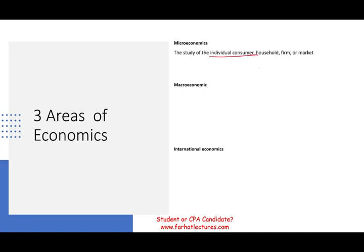Microeconomics is the study of individual consumers, households, firms, or specific markets. You are studying the supply and demand for that individual consumer, household, or firm. Also covered are prices and output, as well as the effect of external forces on the economic activities of these various units. We're going to start looking at microeconomics beginning with the law of supply and demand, prices and outputs, and so on.